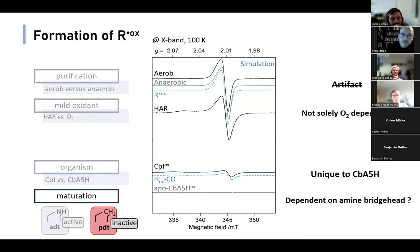We were wondering if it might be dependent on an amine bridgehead, which is heavily involved in catalysis. So instead of using the ADT bridgehead for maturation, we exchanged it to a PDT ligand that renders the enzyme catalytically inactive. And indeed, R^ox is also absent in this variant and tells us that an active cofactor is essential for its formation.